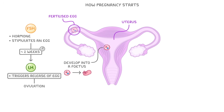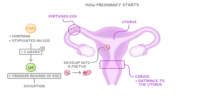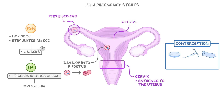For reference later on, this part here is the cervix, which is the entrance to the uterus. So as we go through this video and look at all the different methods of contraception, keep thinking back to this process and remember that contraception has to somehow interrupt this process in order to prevent pregnancy.